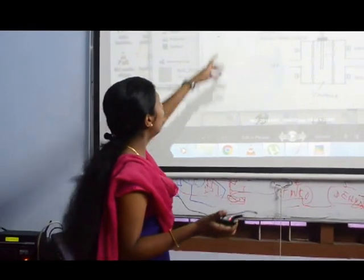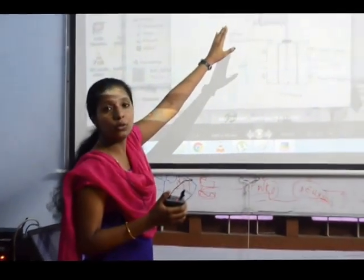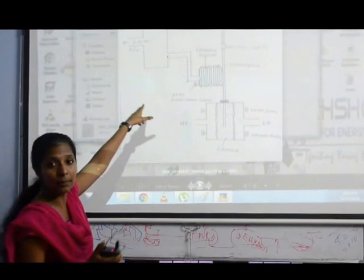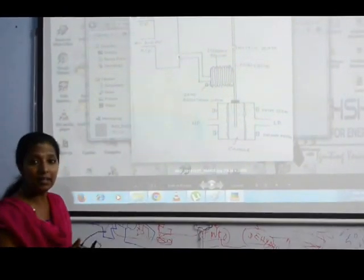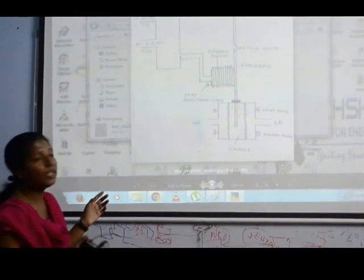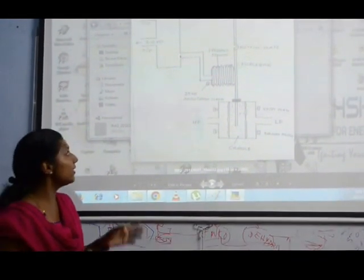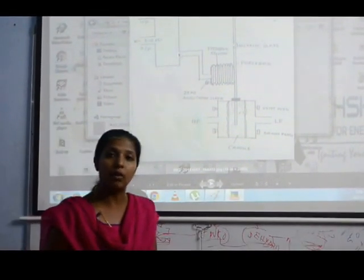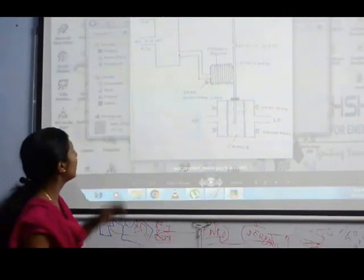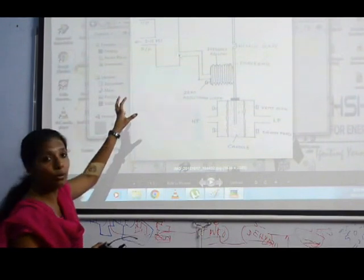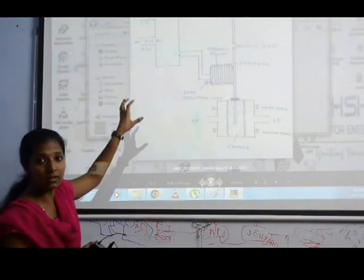The flapper nozzle is connected to an air supply or air relay circuit. Inside this air relay circuit, we are giving a 20 psi supply. That is the working supply of a pneumatic transmitter. That 20 psi is given to the air relay.